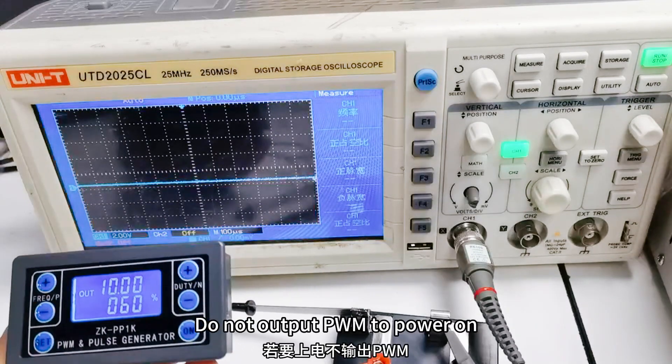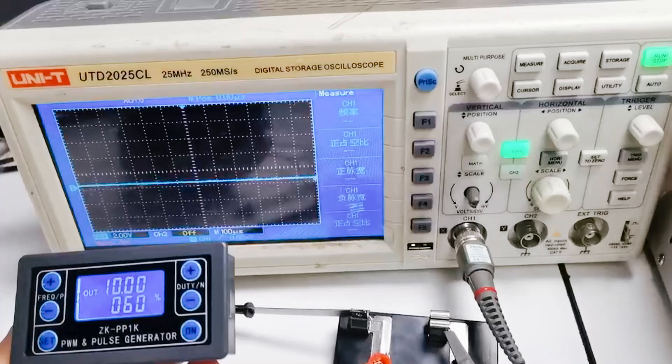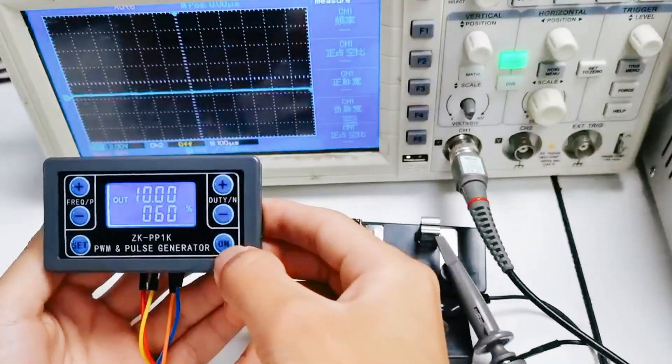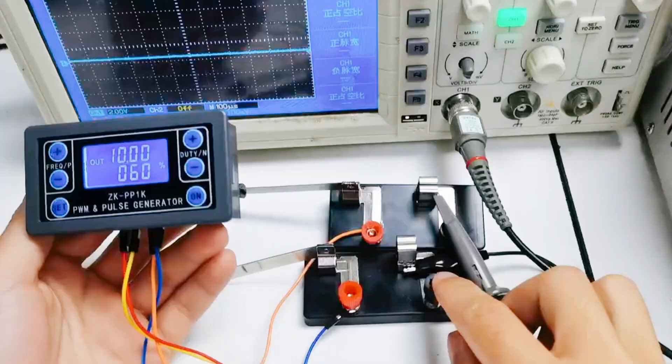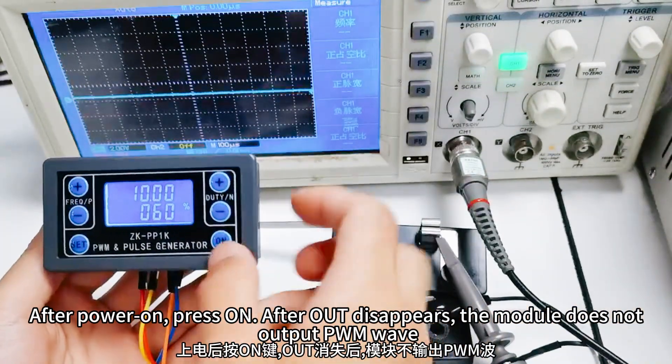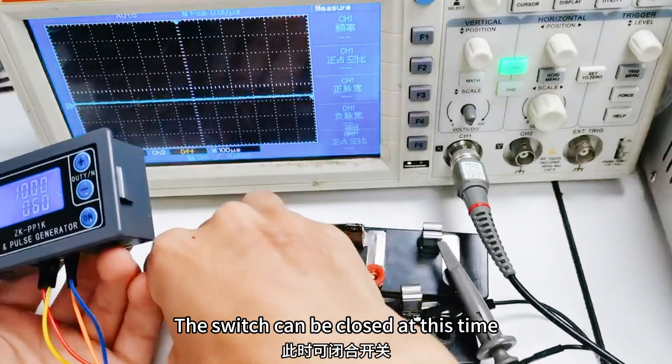Do not output PWM to power on. Two switches can be connected externally at the output end. First off switch. After power on, press on. After out disappears, the module does not output PWM wave. The switch can be closed at this time.